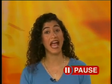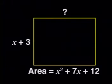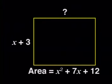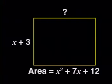Now let's do the opposite process. I'm going to give you the area of a rectangle and the length of one side, and you need to tell me what the other side would be. Look at this rectangle. The area is x squared plus 7x plus 12. One side is x plus 3 units. How long is the other side? I'm going to show you how to do it using the diagram.